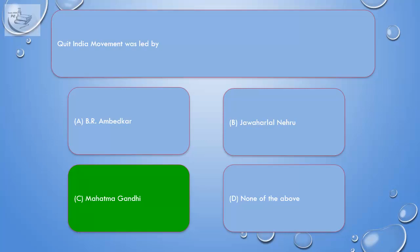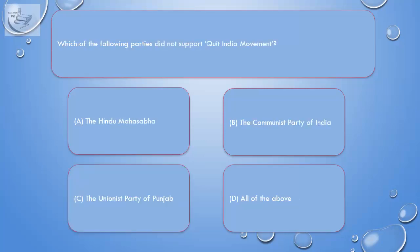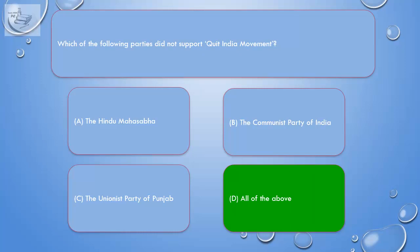Question: Which of the following parties did not support the Quit India Movement? A. The Hindu Mahasabha, B. The Communist Party of India, C. The Unionist Party of Punjab, D. All of the above. Correct answer is D: All of the above.